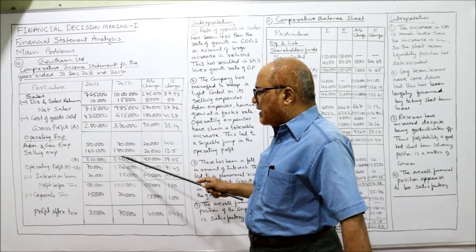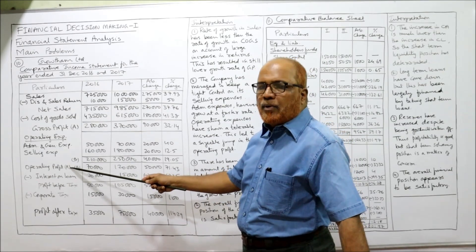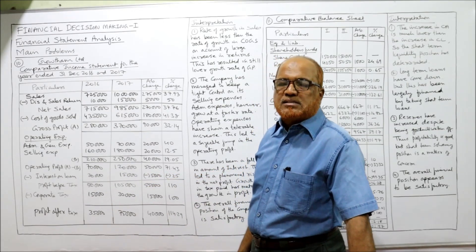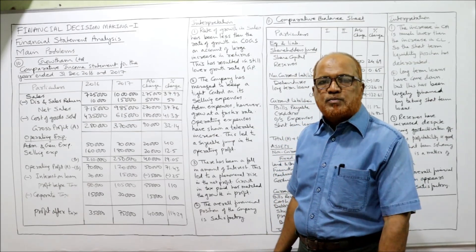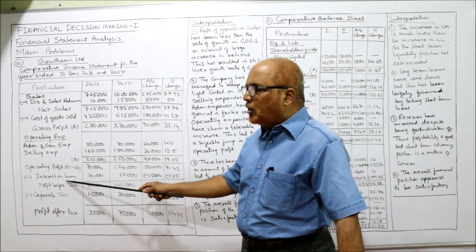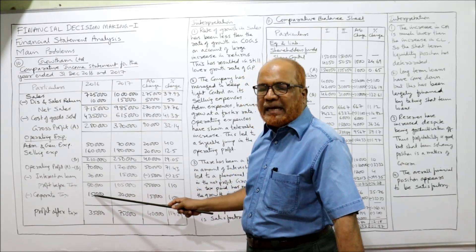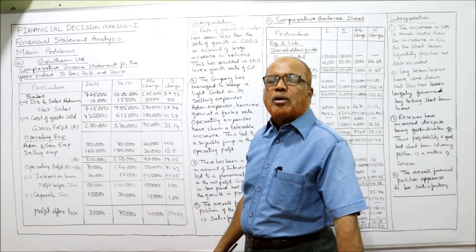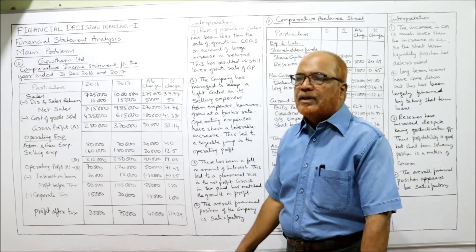Similarly, 3,70,000 minus 2,50,000 gives 1,20,000. From operating profit, deduct non-operating expenses — the non-operating expense here is interest on loan. Deducting interest on loan gives profit before tax. From profit before tax, deduct corporate tax to get profit after tax.